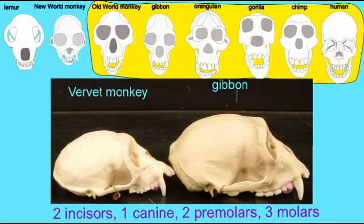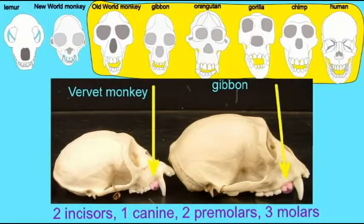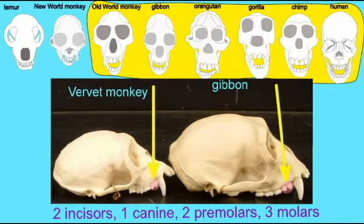So, Catarrhine primates have two incisors, one canine, and three molars like the ancestral condition, but only two premolars instead of the ancestral three.